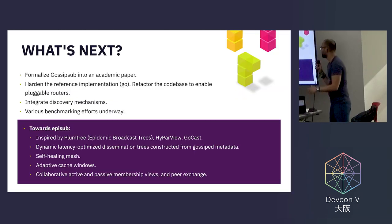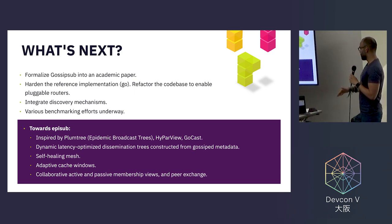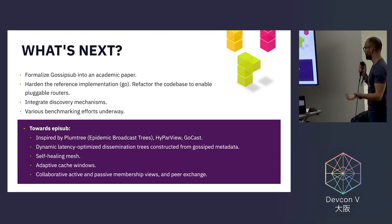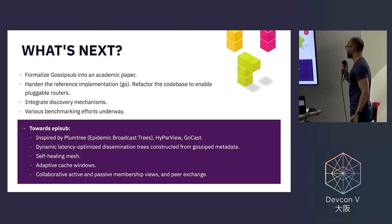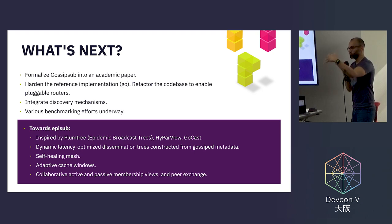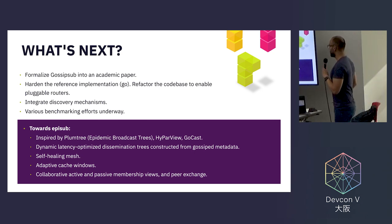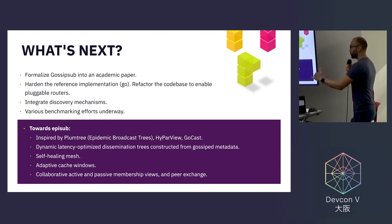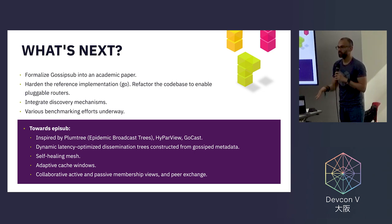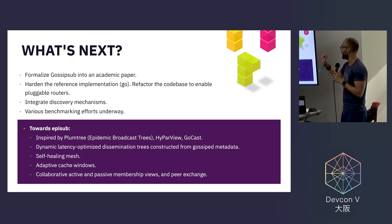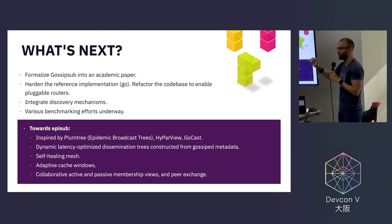What's next for GossipSub? First, we want to formalize GossipSub into an academic paper. We want to harden the reference implementation in Go to enable pluggable routers — very important for the vision of GossipSub. Formalizing into an academic paper is a robust step in allowing downstream projects to build on top of it, analyze it, and get the work peer-reviewed, as it is essentially a new contribution to the state of the art. We want to integrate discovery mechanisms, and there are various benchmarking efforts underway. Importantly, GossipSub is not the final destination — the key aspect is where we want to get to: a protocol we call EpiSub, which combines HyParView for membership maintenance and GoCast for proximity-aware routing.